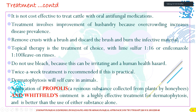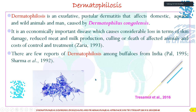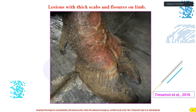Propolis — a resinous substance collected from plants by honeybees — combined with Whitfield's ointment is highly effective in treating dermatophytosis, performing better than either substance alone. Propolis has been used in several dermatological disorders including lumpy skin disease. Dermatophilosis, caused by Dermatophilus congolensis, is also an economically important disease with few reports in buffaloes from India, as reported by Paul et al. in 1995 and Sharma et al. in 1992. Lesions show thick scabs and fissures in the limbs, as reported by Tresamol et al. in 2016.